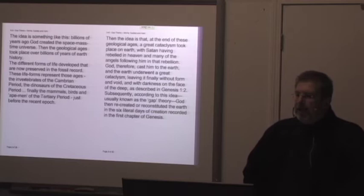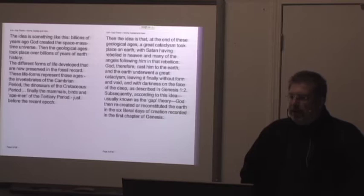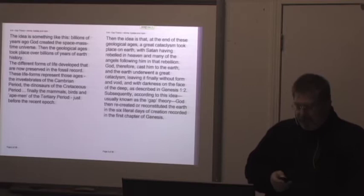The idea is something like this. Billions of years ago God created the space mass time universe. Then the geological ages took place over billions of years of earth history. The different forms of life developed that are now preserved in the fossil record. These life forms represent those ages, the invertebrates of the Cambrian period, the dinosaurs of the Cretaceous period, finally the mammals, birds and ape men of the tertiary period just before the recent epoch. Then the idea is that at the end of these geological ages a great cataclysm took place on earth with Satan having rebelled in heaven.